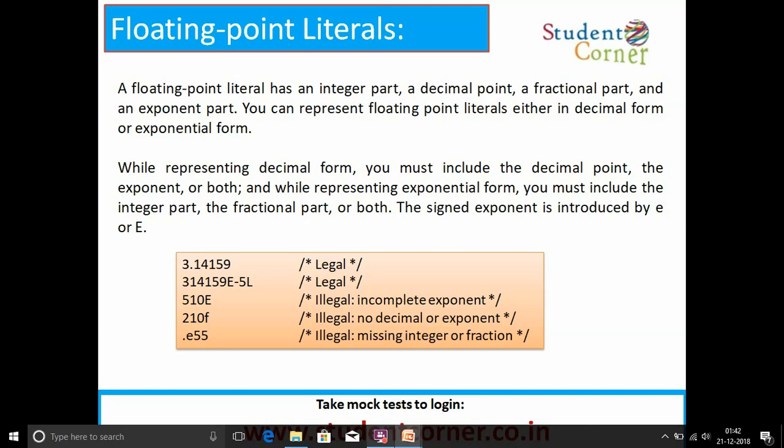3.14159 is legal. 314159E-5L is legal. The remaining are illegal representations. Why? Because 510E has an incomplete exponent—after E we need to mention some value. Second one, 210F, has no decimal or exponent. And .E55 is missing integer or fraction.